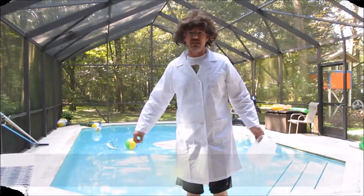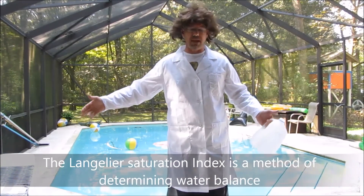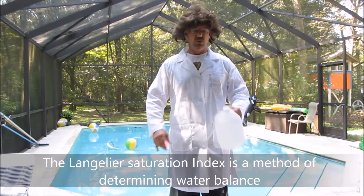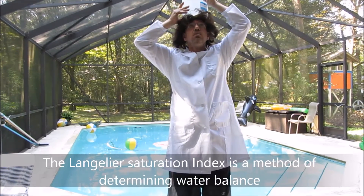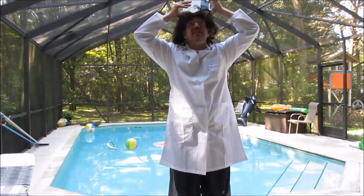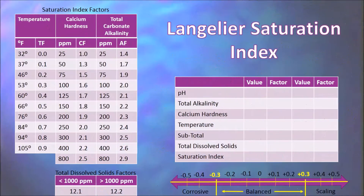Hello there, Professor Poole here. Today we will talk about water balance. To do this, we will use what is called the Langelier Saturation Index. In order to calculate the Langelier Saturation Index, one must know the actual alkalinity, pH, calcium hardness, water temperature, and total dissolved solids.